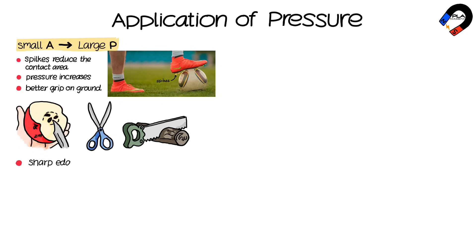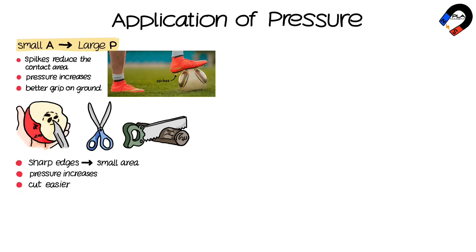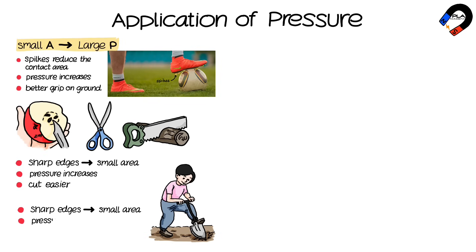Knives, scissors, and saws are all used to cut objects because they have sharp edges that create a small area of contact, resulting in a high pressure that helps to cut objects more easily. Similarly, a shovel's sharp edge creates a small area of contact with the ground, resulting in high pressure that helps to dig the soil more easily.